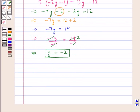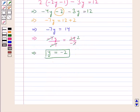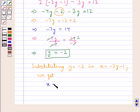Now that we have got the value for y, we can substitute this value of y in x is equal to minus 2y minus 1. Substituting y equal to minus 2 in x equal to minus 2y minus 1, we get x is equal to minus 2 multiplied by minus 2 minus 1.